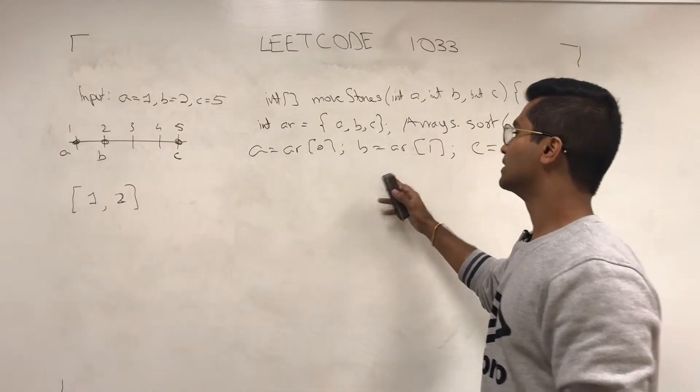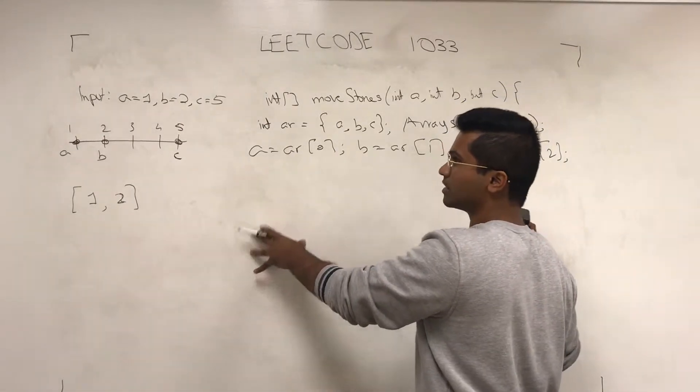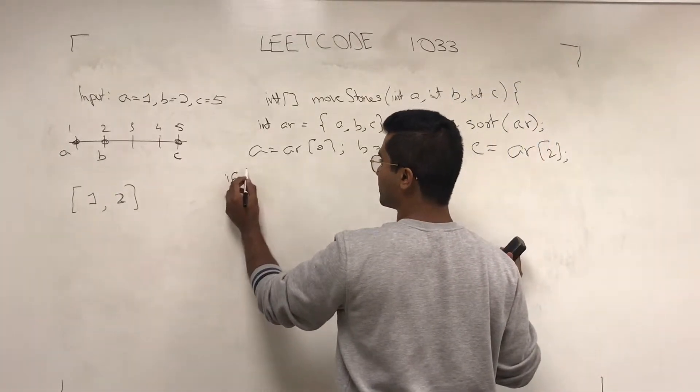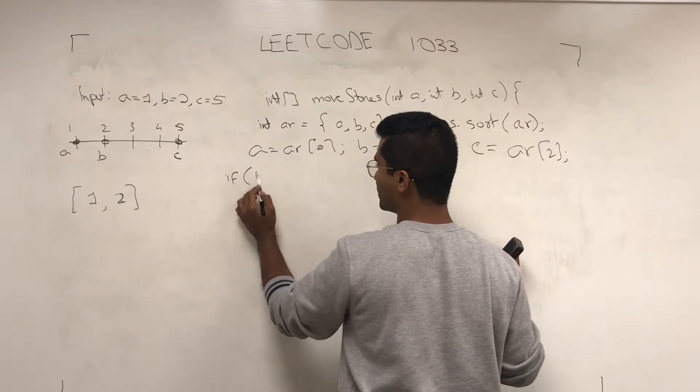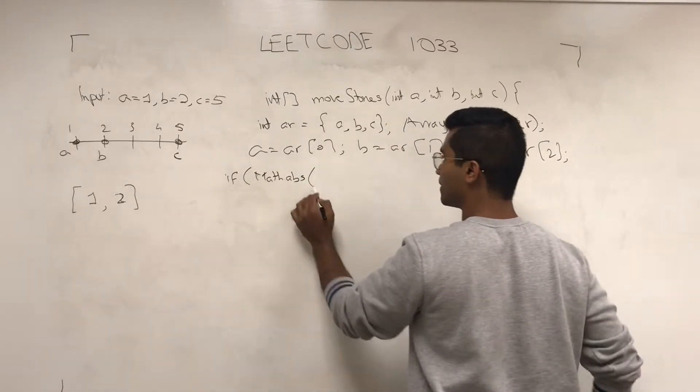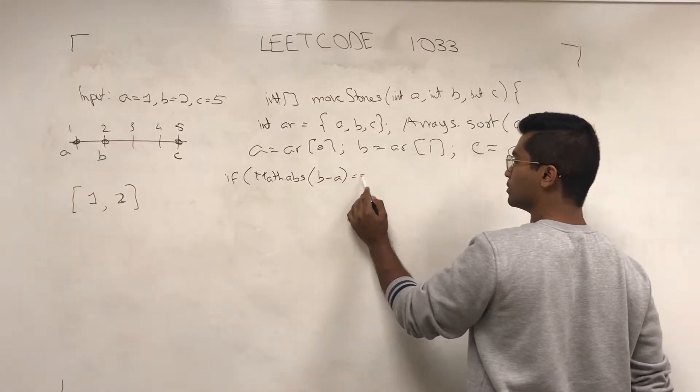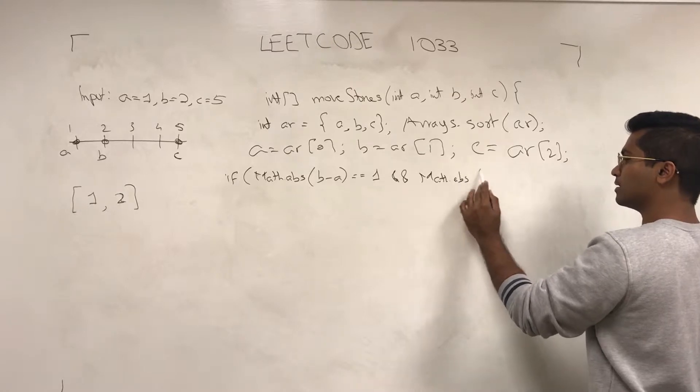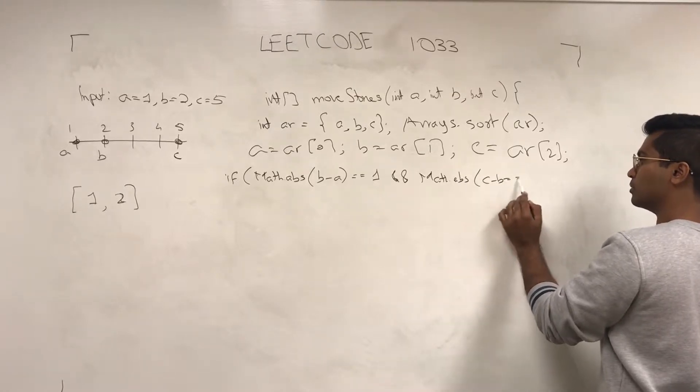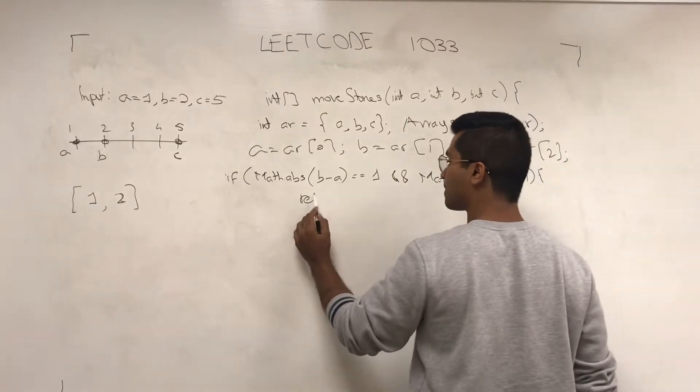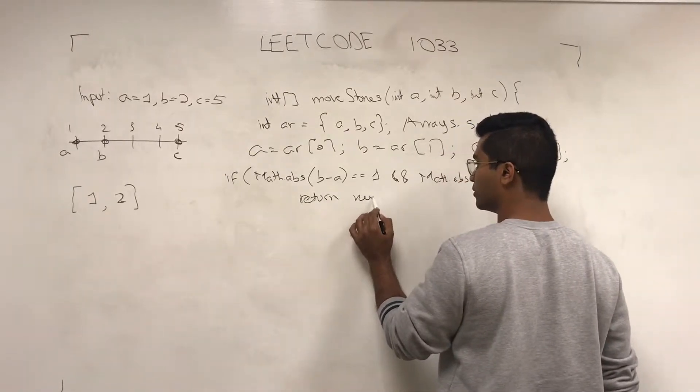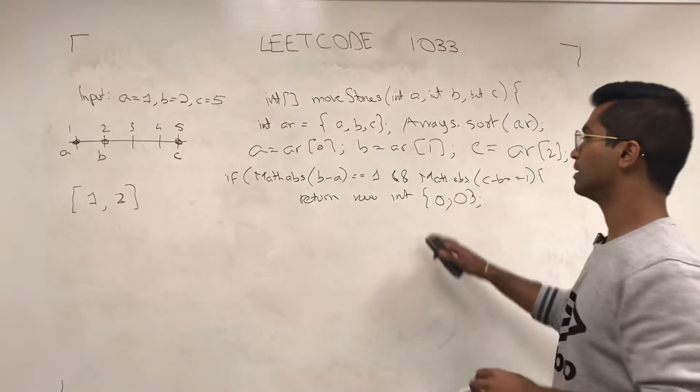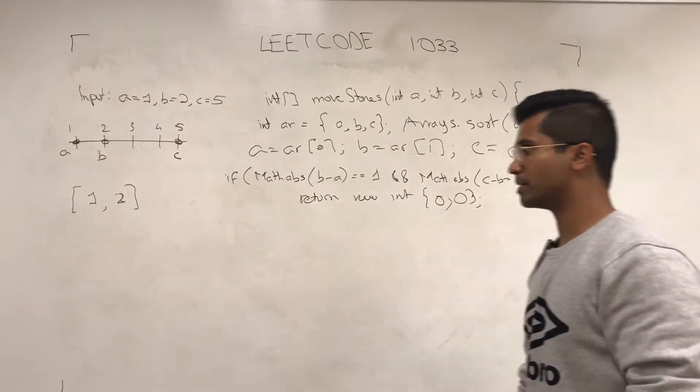Now I check to see if all three of them were already next to each other, in which case you just return 0, 0. If Math.abs(b minus a) is equal to 1 and Math.abs(c minus b) is equal to 1, just return new int[0, 0]. And that's it for the first base case.